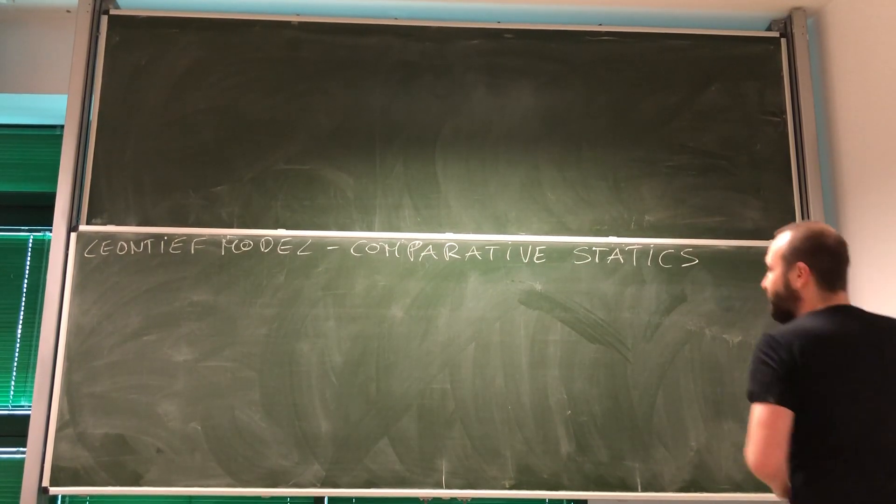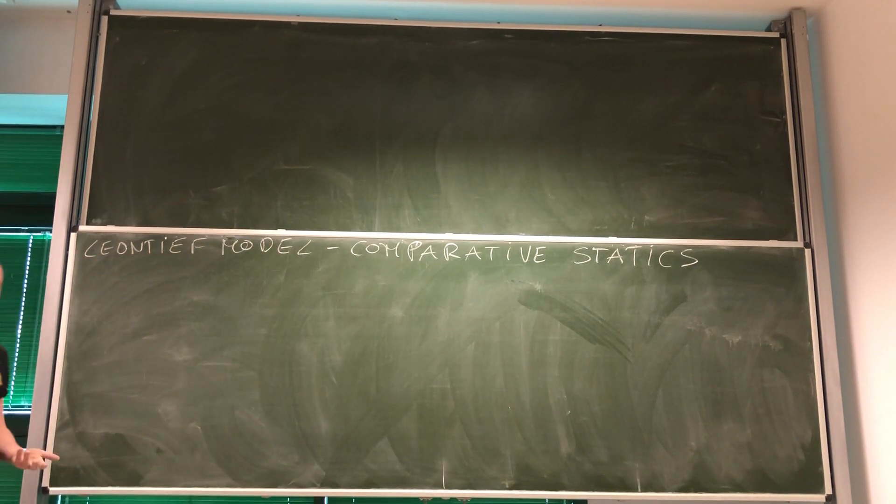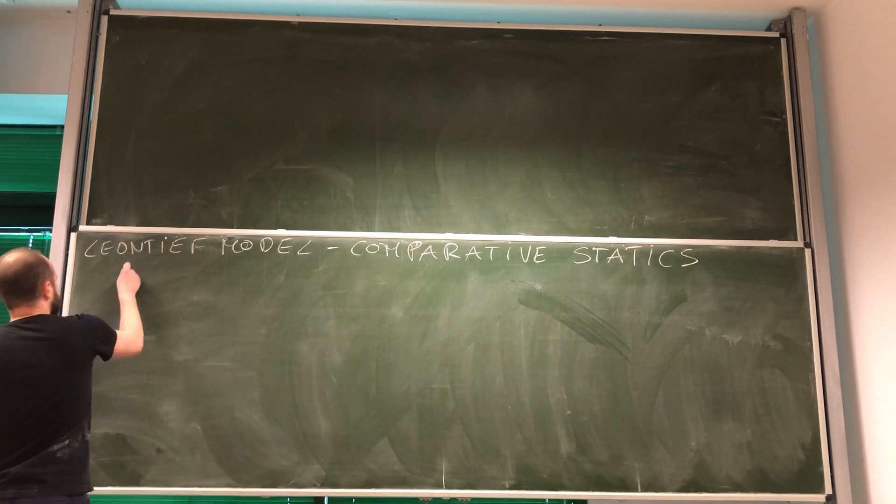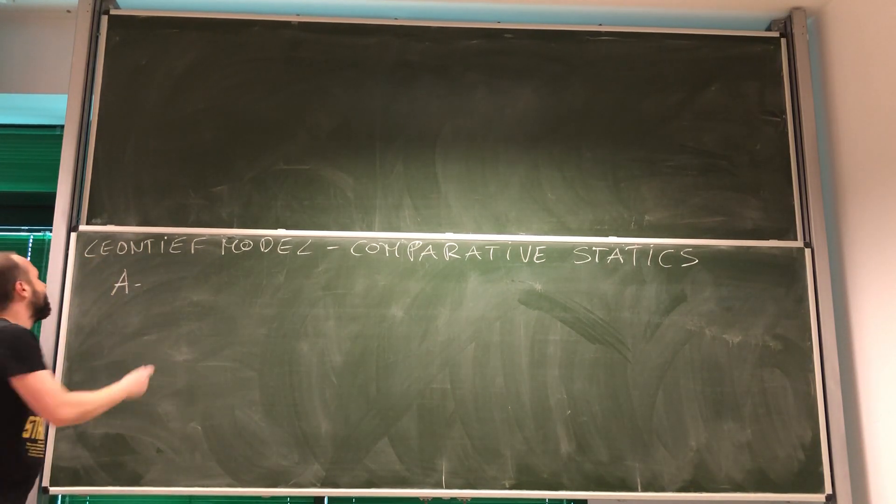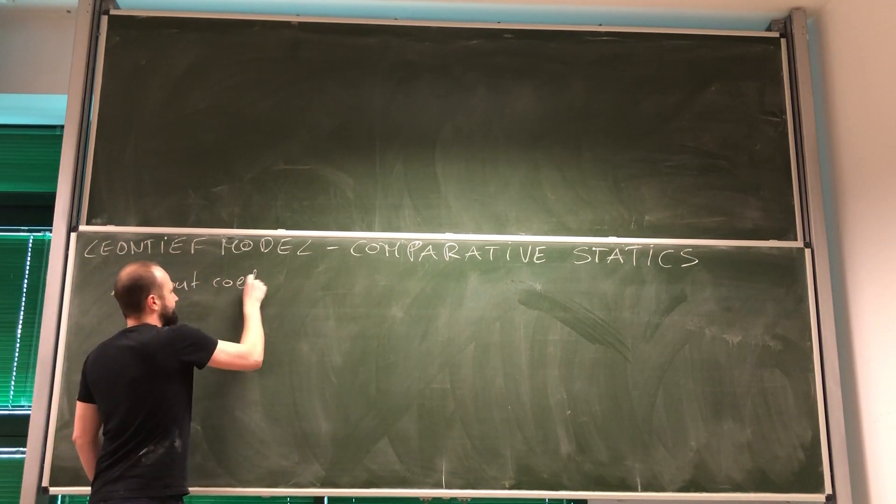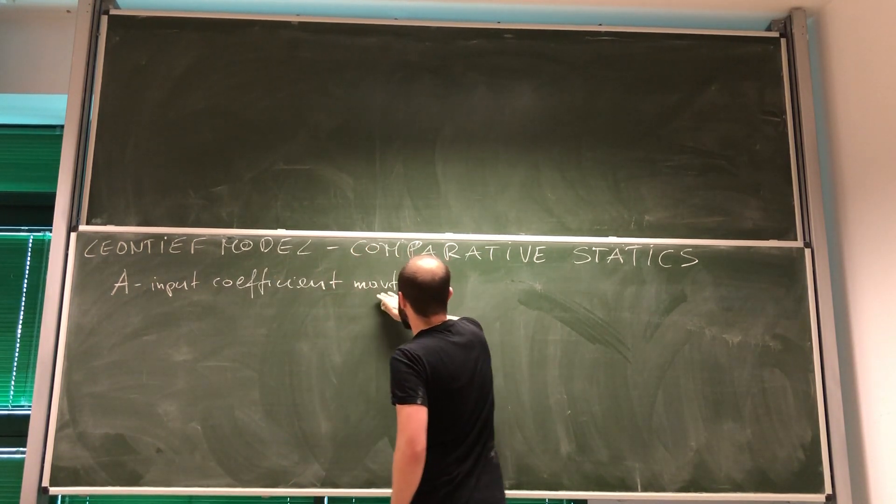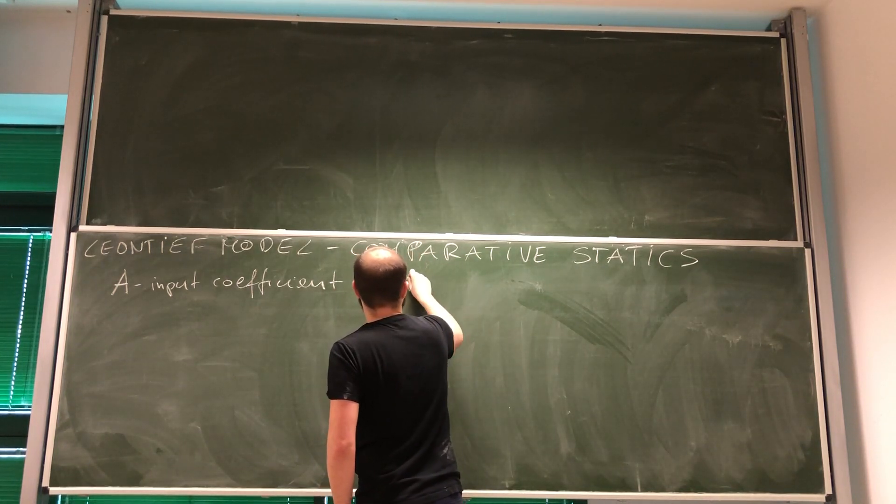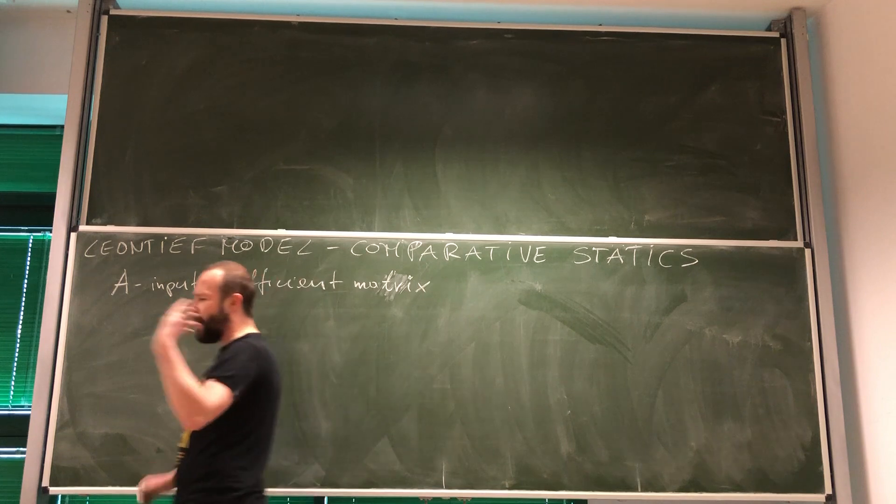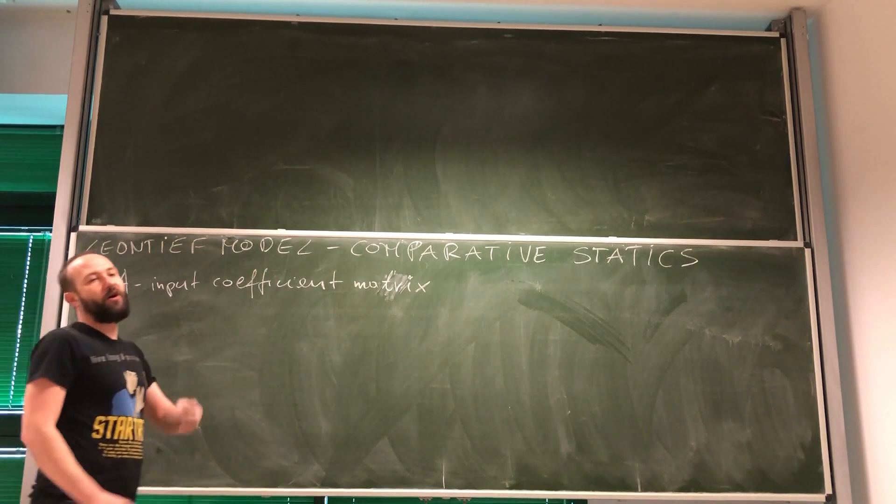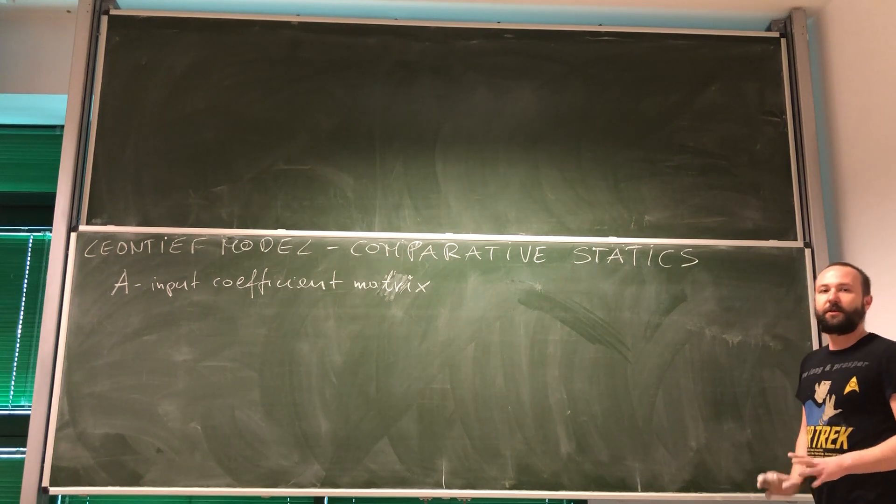Hi. A couple of videos ago we discussed the LTF model and we listed a couple of things that are required for this model. The most important is of course matrix A, which is simply called input coefficient matrix. From input coefficient matrix we were getting information how much of a dollar's worth of output of a given industry is used as an input in another industry.